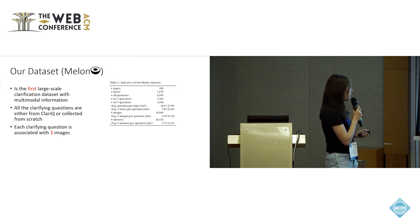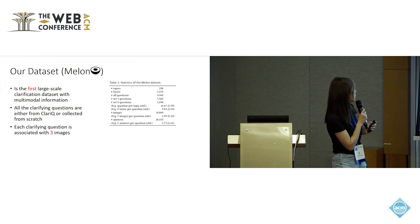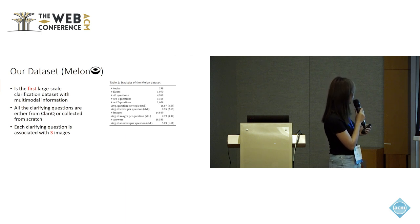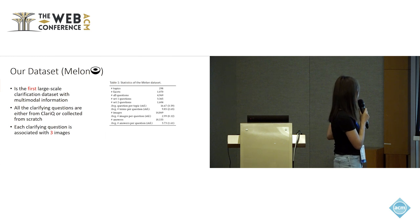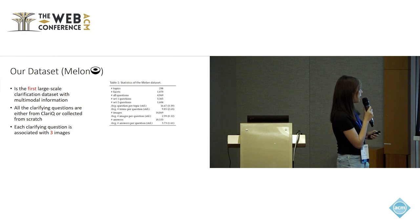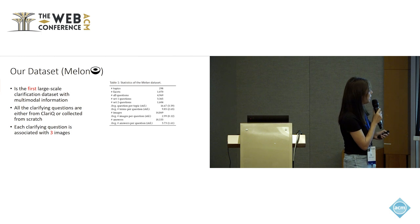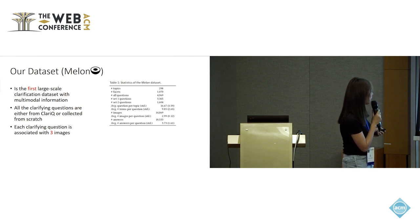To facilitate our research in this domain, we propose our dataset called Melon, which is the very first large-scale clarification dataset with multimodal information. All clarifying questions come either from a text-only clarification dataset called ClaryQ or were collected from scratch, and each clarifying question is associated with three different images. This table shows detailed statistics of our proposed Melon dataset. It consists of over 4K questions with an average of almost three images per question, and in total we have collected more than 15K images.